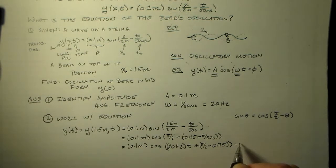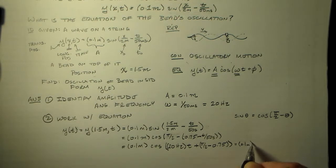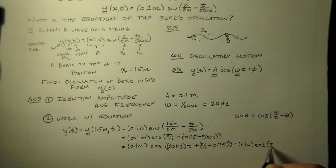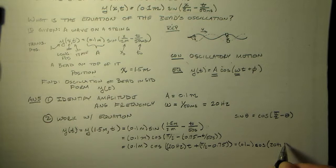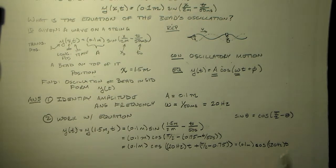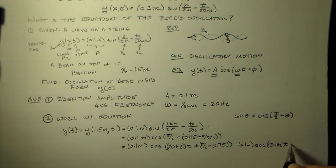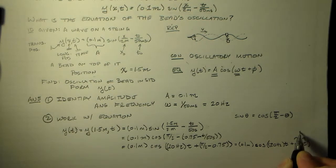0.1 meters. Cosine. 20 hertz. Times t. And. Let's see. That's what... 1.57 minus 0.75. So that's plus 0.82. So that's the phase φ right there. Right.